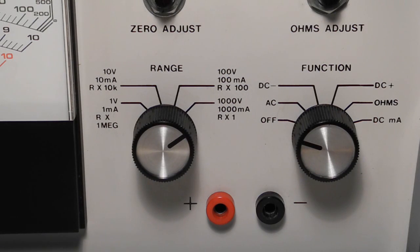The right knob selects the function: off, AC volts, DC volts minus, DC volts plus, ohms or milliamps. You can select DC plus or minus to avoid having to switch the leads, which can otherwise be a problem when running on the AC power supply as the negative lead is grounded.